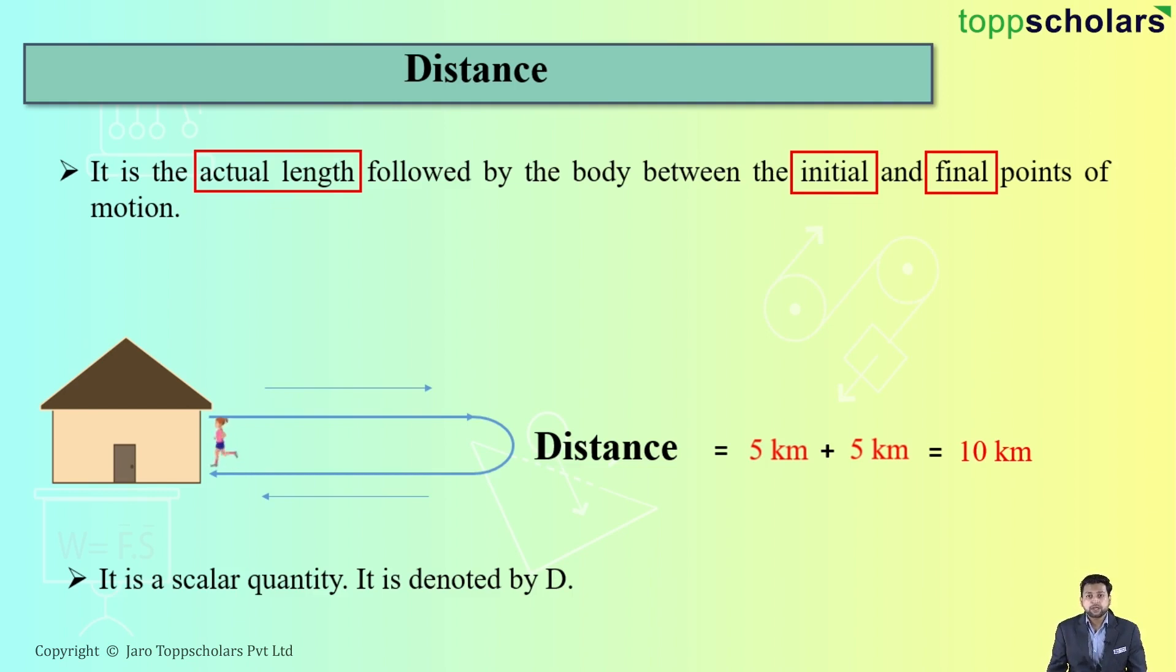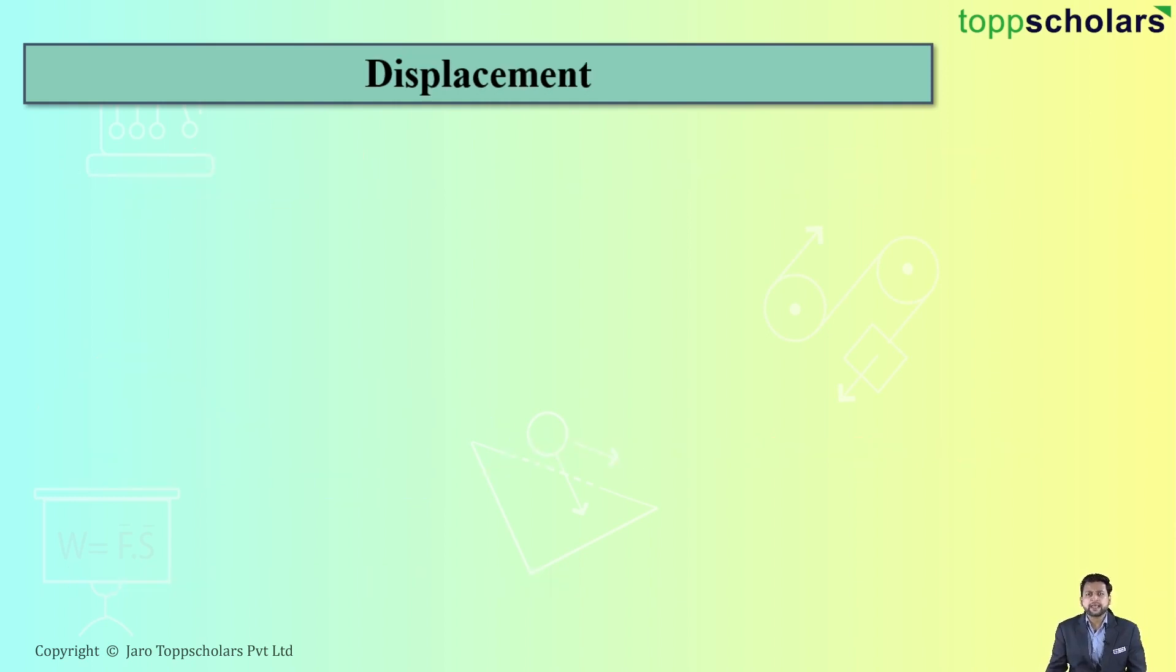It just denotes the quantity or you can also call it as magnitude. Students, distance is basically denoted as D.